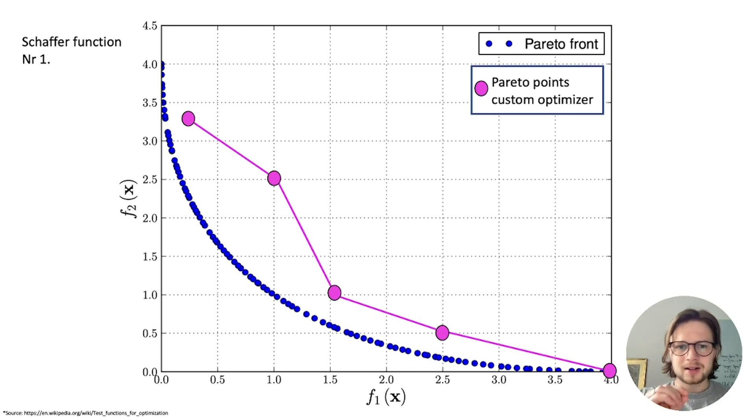You can directly see in which areas is my optimizer good, in which area is it bad perhaps. So how good are the points distributed over the Pareto front here. You see for f1 he gets the extreme points, for f2 he doesn't at this moment.